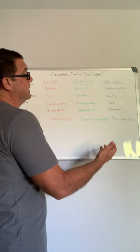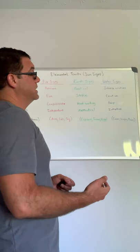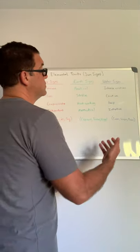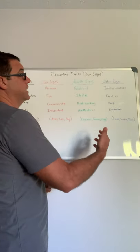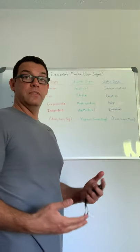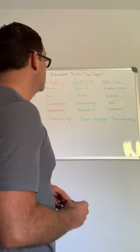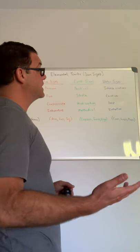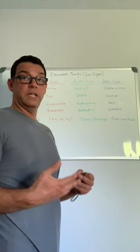And then our last element is water. And some things that you see from people with water signs that are prominent are they have intense emotions, they're creative, they're deep, they're intuitive. So within the water sign element, there's Cancer, there's Scorpio, and there's Pisces.